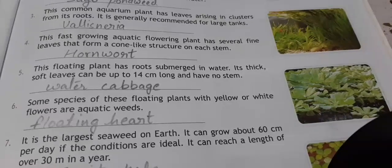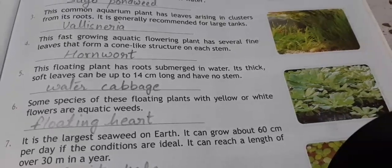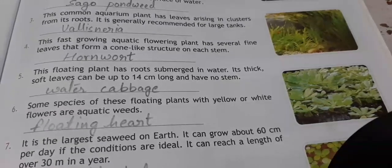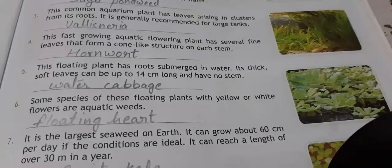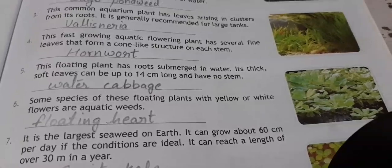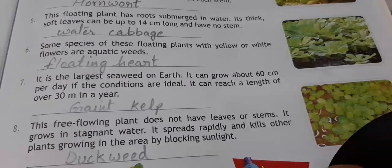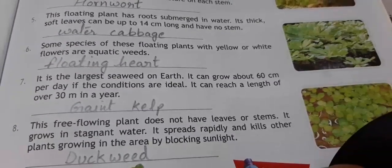The fifth one is a floating plant with its roots submerged in water. Its thick, soft leaves can be up to 14 cm long and have no stem. We call it water cabbage.